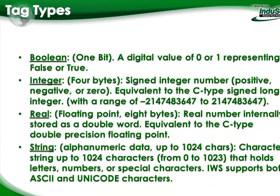We have four main tag types: Boolean, Integer, Real, and String. Booleans are just a bit — a digital value of 0 or 1 representing false or true. In InduSoft Web Studio, a non-zero value is also considered true. So not only 1, but 10, 100, or 235 are also considered true, as well as a negative number — as long as it's non-zero. If you write a negative number into a Boolean, it will come up as true.